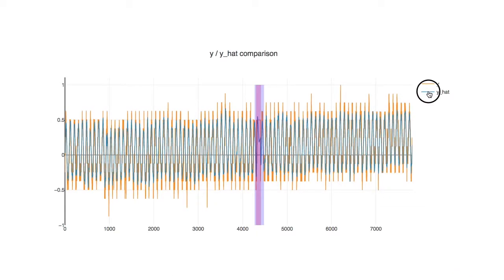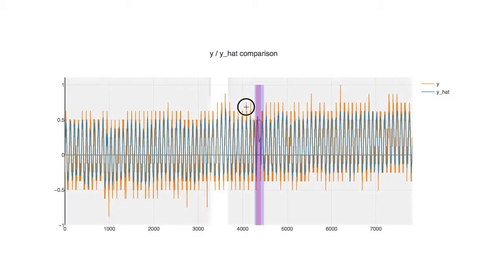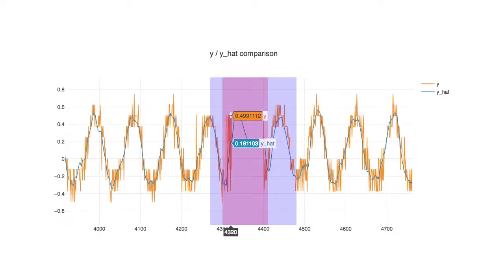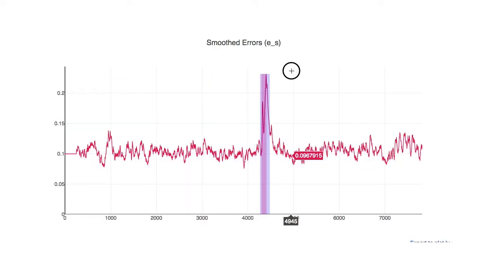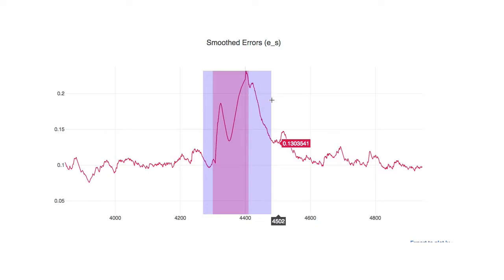For example, this is a stream of telemetry containing an anomaly that wouldn't be detectable using a threshold. If we zoom in on the anomaly, we can see the channel briefly flatlined, resulting in poor prediction accuracy. Below we can see the error plot showing the spike in error where the prediction was poor.